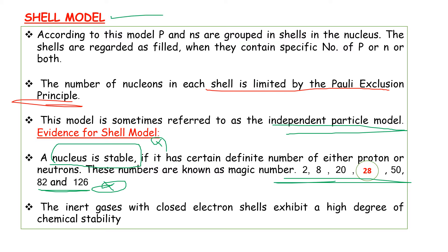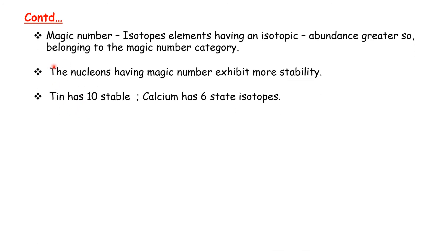The inert gases with closed electron shells exhibit a high degree of chemical stability. Similarly, nuclei with closed shells show high stability, having isotopic emergence greater.